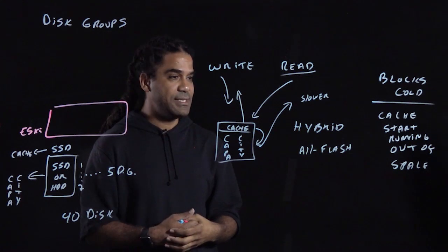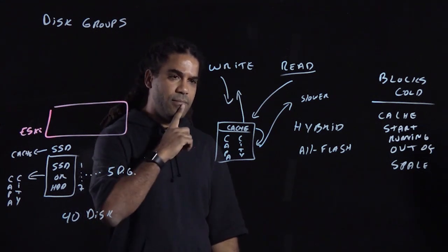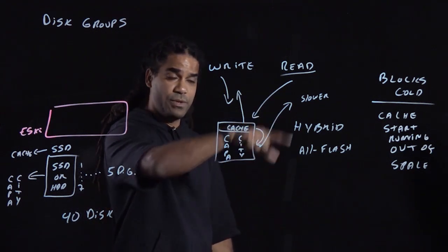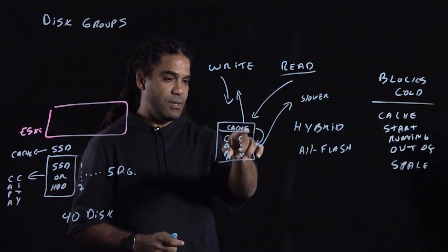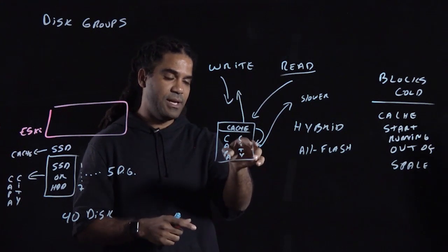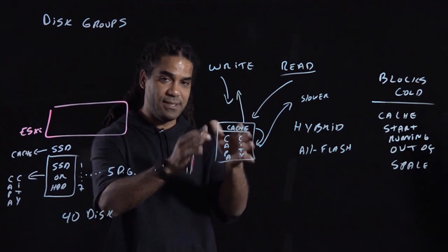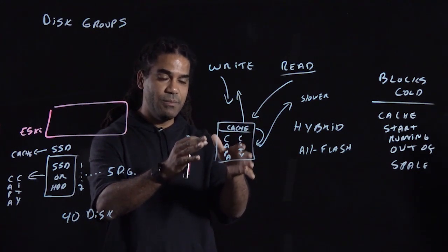Something else about this is that we have hybrid, we have all-flash. What's the difference between the read? When the read comes in from the all-flash, the blocks that were read do not get copied back up to the cache. They stay just in the capacity.